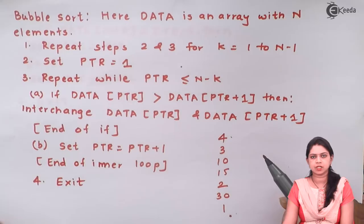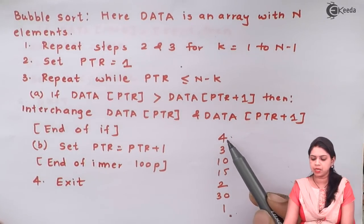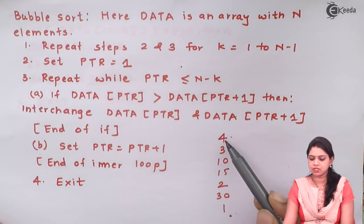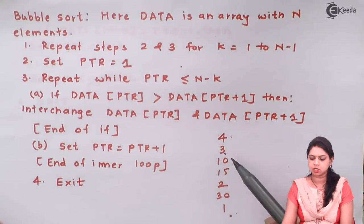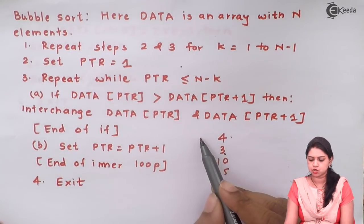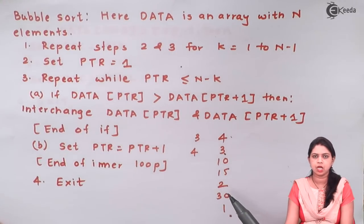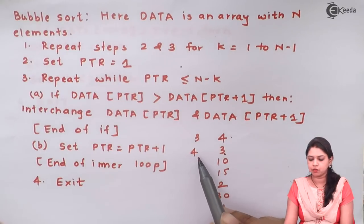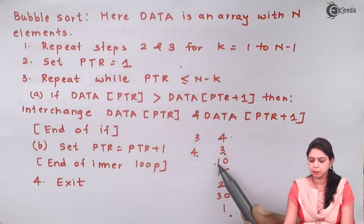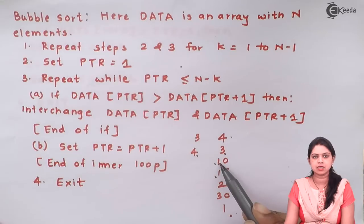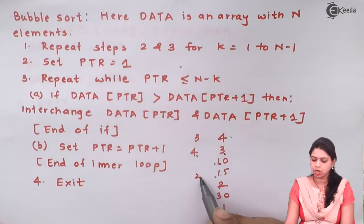I will be sorting the elements in ascending order. My first element is 4 and the next element is 3. Since 3 is less, I will exchange them — 3 goes up and 4 comes down. I compare 4 and 10: 4 is less, no exchange. I compare 10 and 15: 10 is less, no exchange. Between 15 and 2, my 2 will go up and 15 will come down.